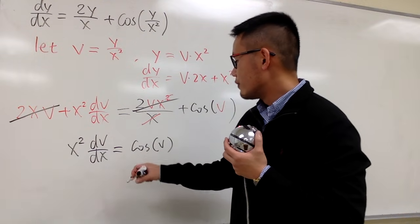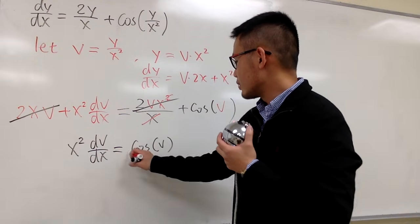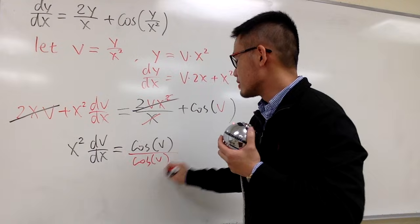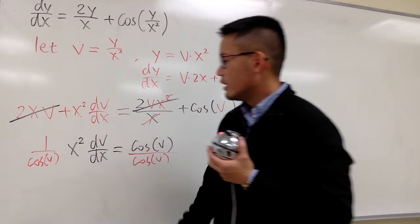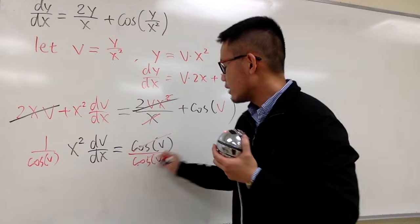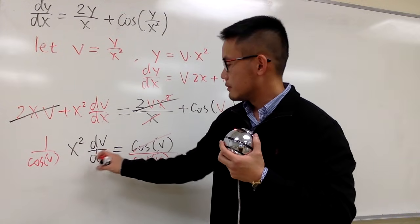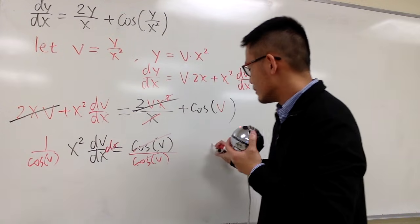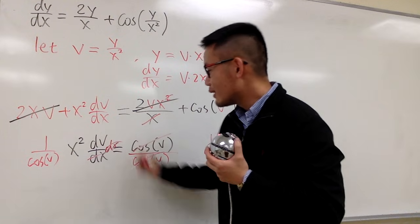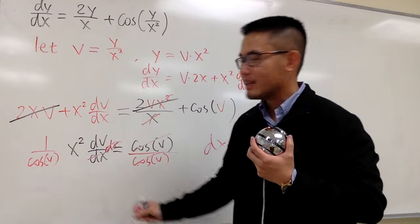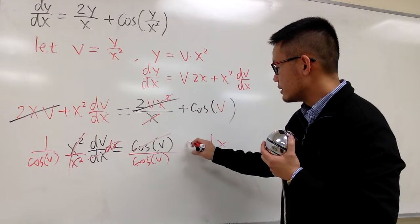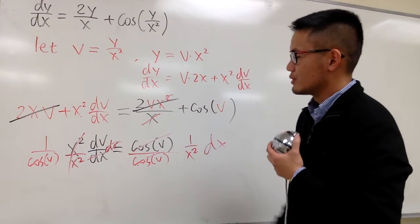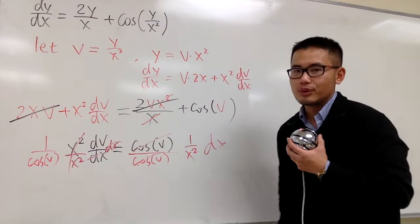Let's multiply 1 over cosine of v on both sides. So let me just do that right here. Let's divide by cosine of v on both sides. Let me just show you guys all the work. So multiply by 1 over cosine of v. And in the meantime, I will cancel this out, but I will bring the, let's multiply dx on both sides. And so they cancel out, but I also have to bring the x to the other side, right? So let's divide it by x squared. So they cancel out, so I will put this down as 1 over x squared. So just do that. You want to do that in your head, that's totally okay too.